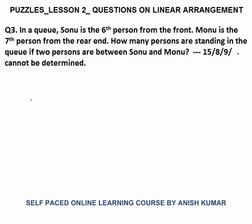Question 3 — pause the video, try to solve yourself, then look at the way I have solved. These are very interesting questions. Once you practice more of these, your analytical abilities will become very strong. The question says: in a queue, Sonu is the 6th person from the front, Monu is the 7th person from the rear end. We can assume the front end on the left and the rear end on the right.